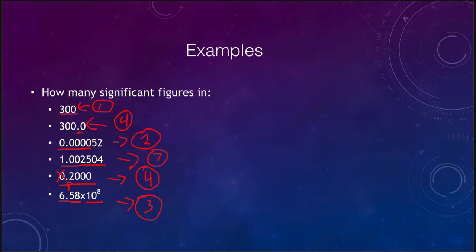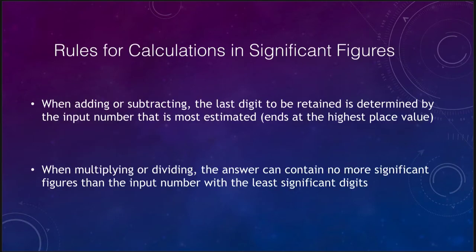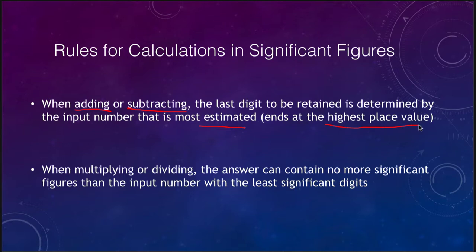So those are examples of how you figure out how many significant figures a number has. Go back and use those rules from the previous slide to tell exactly how many significant figures there are. Now, how does this apply to calculations? We have to look at the rules for calculations involving significant figures. When we are adding or subtracting, the last digit to be saved is from the input number that is the most estimated — meaning it ends at the highest place value.